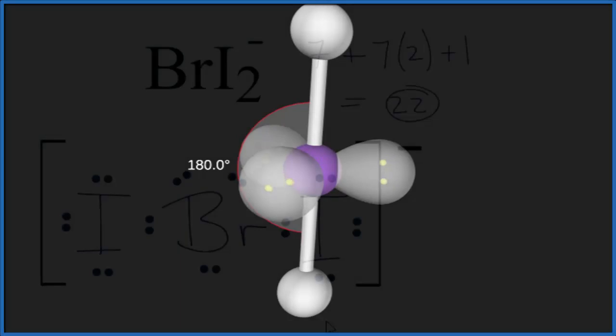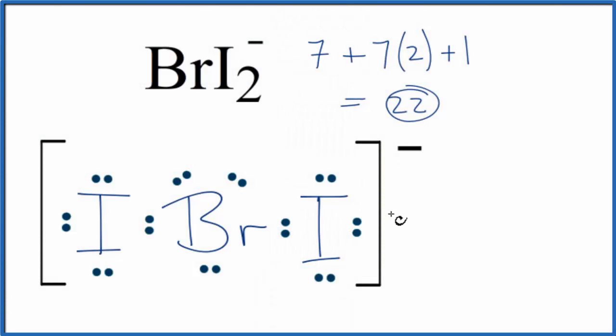Back to our Lewis structure. You could also use the AXE notation for the molecular geometry, where A is the central atom (the bromine), X is the number of atoms bonded (we have two iodine atoms), and E is the number of lone pairs (three). That would give you a linear molecular geometry as well.